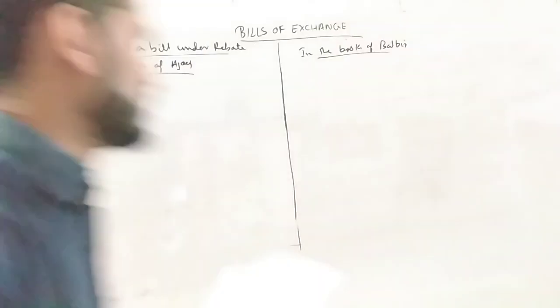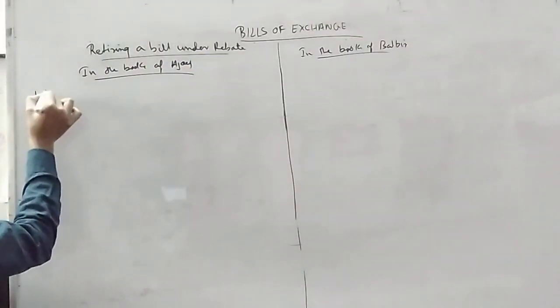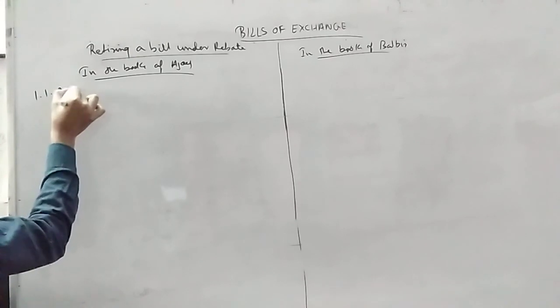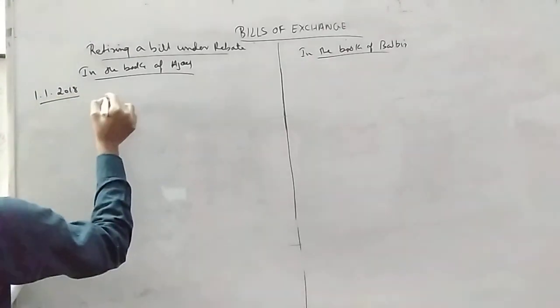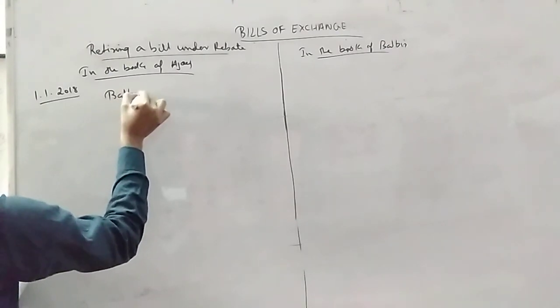First date, what is the date? 1st January 2018. Ajay sold the goods. Ajay sold the goods to Balbir.